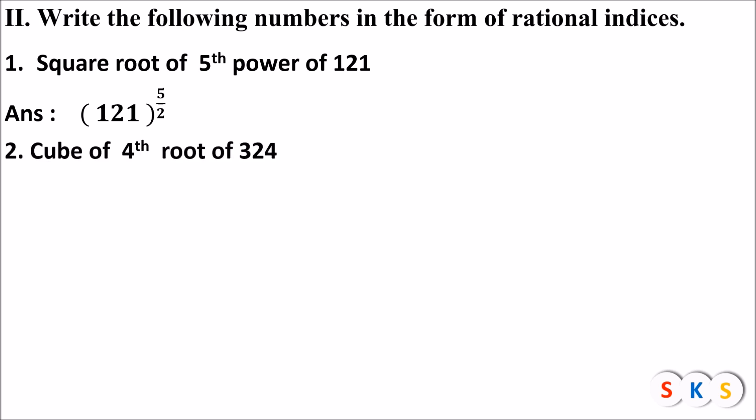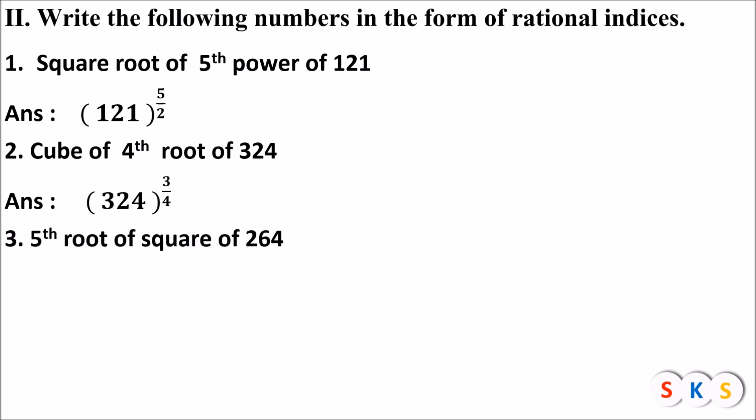Cube of the fourth root of 324: the power is 3 (cube), so the numerator is 3; the root is fourth root, so the denominator is 4. It is written as 324 raised to 3 upon 4. Fifth root of the square of 264: the root is fifth root, so the denominator is 5; the power is square, so the numerator is 2. It is written as 264 raised to 2 upon 5.